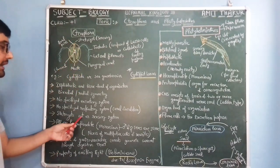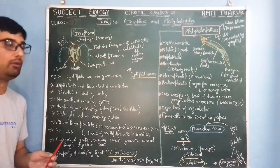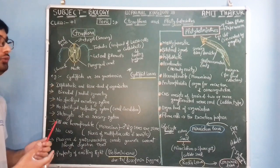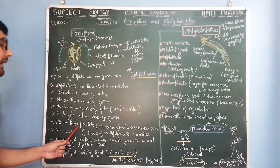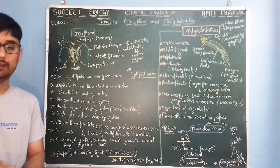Statocysts act as sensory system which sense everything around the body of Ctenophora. When it comes to reproductive structures, all Ctenophoras are hermaphrodite, that means the male and female sexes are not separate, they are same.